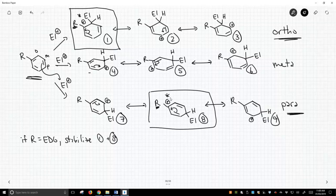If R is an electron withdrawing group, then we're going to destabilize one and eight. That's going to make ortho and para less favorable. It's not that meta is all that good with an electron withdrawing group, it's just that ortho and para are terrible. Meta wins by default.